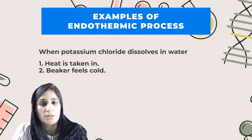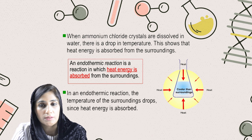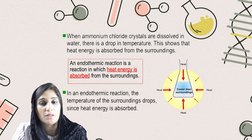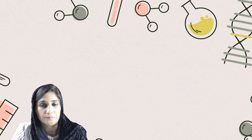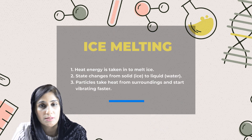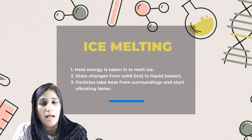A similar reaction is displayed in the diagram, where potassium chloride is replaced by ammonium chloride. It is also an endothermic process because no chemical reaction is taking place — just a physical change, which is the mixing of a salt in water. Another example of an endothermic process is ice melting, which we already discussed as a trigger activity. Heat energy is taken in to melt ice and its state changes from solid to liquid.